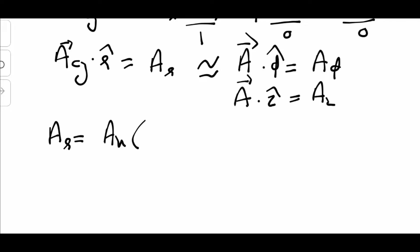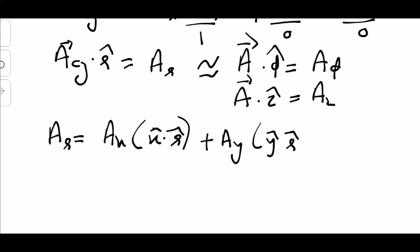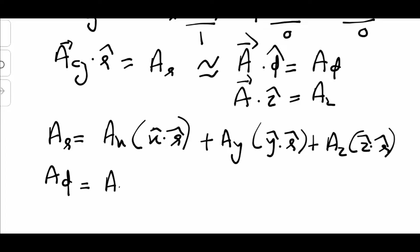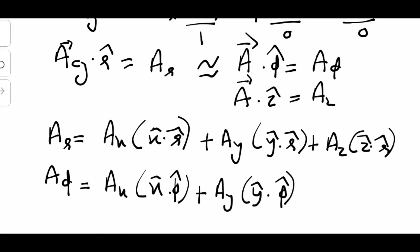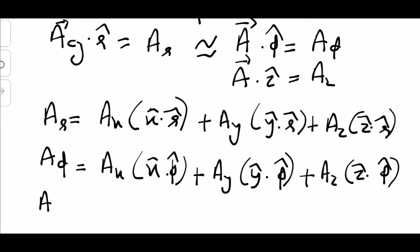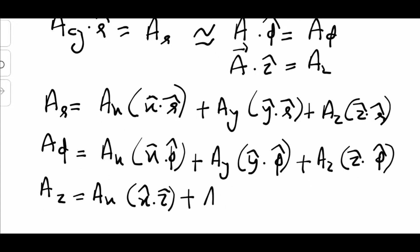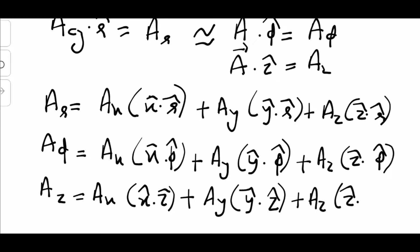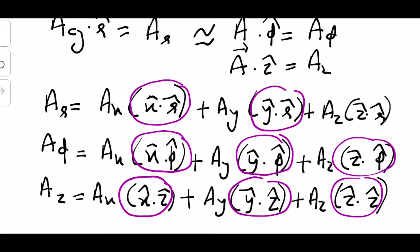In generic form, Ar equals Ax(x̂·r̂) + Ay(ŷ·r̂) + Az(ẑ·r̂). Similarly, A-phi equals Ax(x̂·φ̂) + Ay(ŷ·φ̂) + Az(ẑ·φ̂). And Az equals Ax(x̂·ẑ) + Ay(ŷ·ẑ) + Az(ẑ·ẑ). This is the basic transformation of a vector from r̂ to ẑ, but we still need to find the values of these dot products.